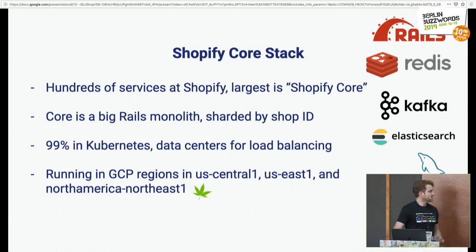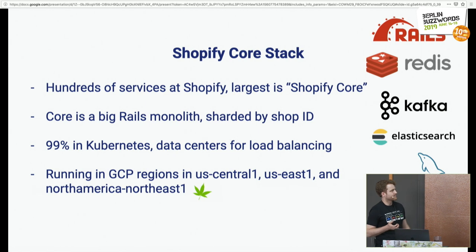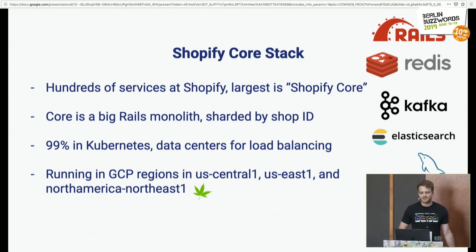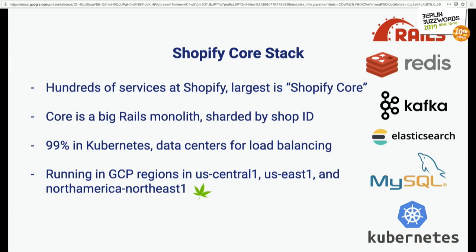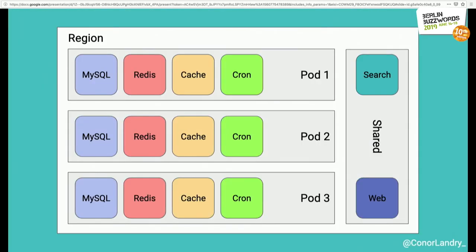Looking at Shopify core now: there are hundreds of services at Shopify, and the largest is Shopify core — a pretty conventional Rails monolith. We shard the monolith by shop ID as well, and it's 99% run in Kubernetes. We made the shift from data centers to Kubernetes in 2017. We run in three regions: US Central, US East, and Northeast one, which is special because it's in Montreal where I live, and also runs a large portion of Canadian legal cannabis sales.